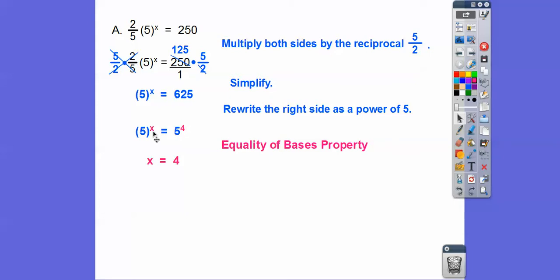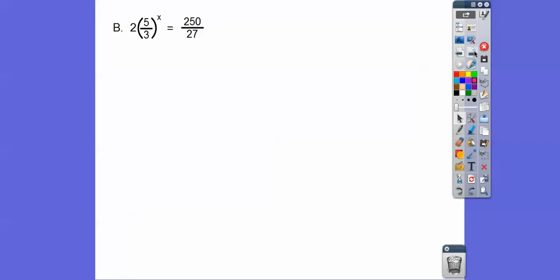625 is the same as 5 to the 4th. So that means x equals 4. That means when we get 5 to a power equals 5 to another power, the powers have to be equal to each other.